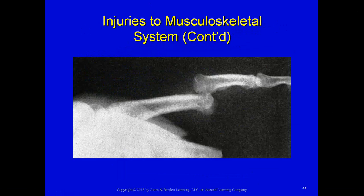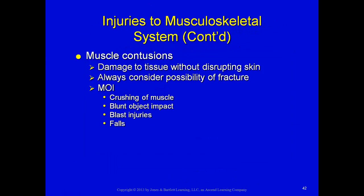In a dislocated finger, the supporting ligaments have to be stretched beyond their limits and may even be torn. Muscle contusions are damage to tissue without disruption of the skin. A deep muscle bruise can be very painful, and you must also consider the possibility of a fracture. Look at the mechanism of injury: was it a crushing blow, blunt object impact, blast injury, or a fall from a height? All these things could cause muscle contusions in combination with a fracture.